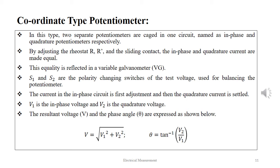In the coordinate type potentiometer, two separate potentiometers are caged in one circuit named as in-phase and quadrature potentiometers respectively. By adjusting the rheostat R and R' and the sliding contact, the in-phase and the quadrature current are made equal.